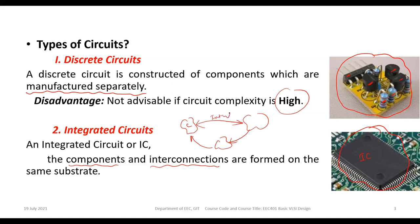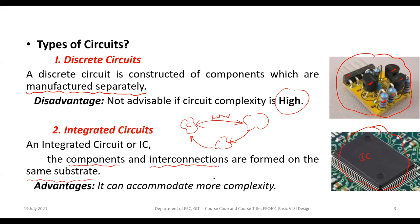All components — whether active components like transistors or interconnections like wires — are formed on the same substrate, which is a base material. On this base material, we construct components such as transistors, capacitors, and inductors, as well as their interconnections. These components are at a microscopic, nanometer-scale size.